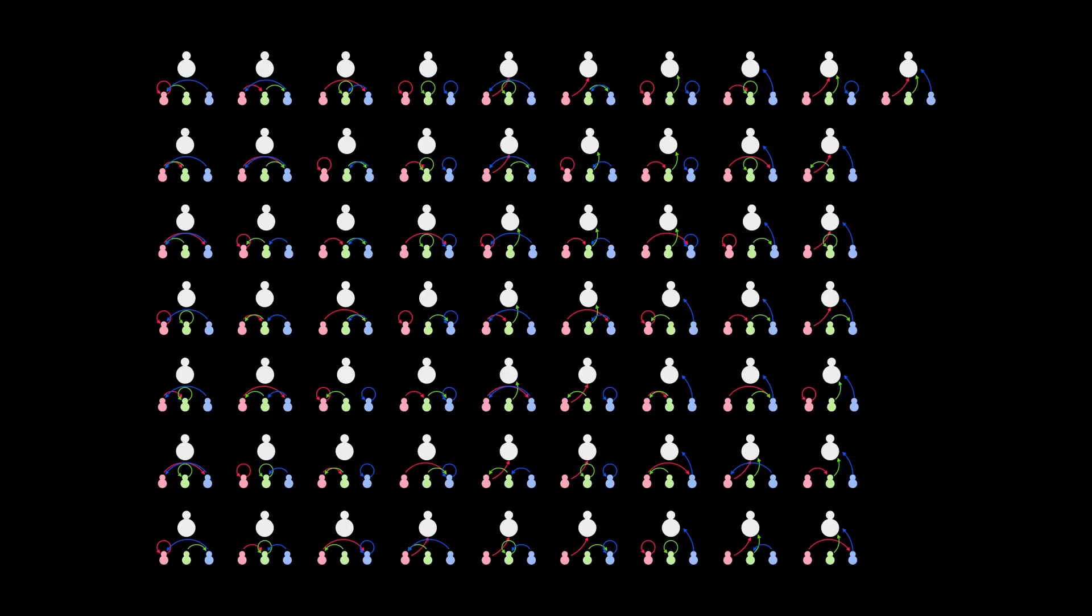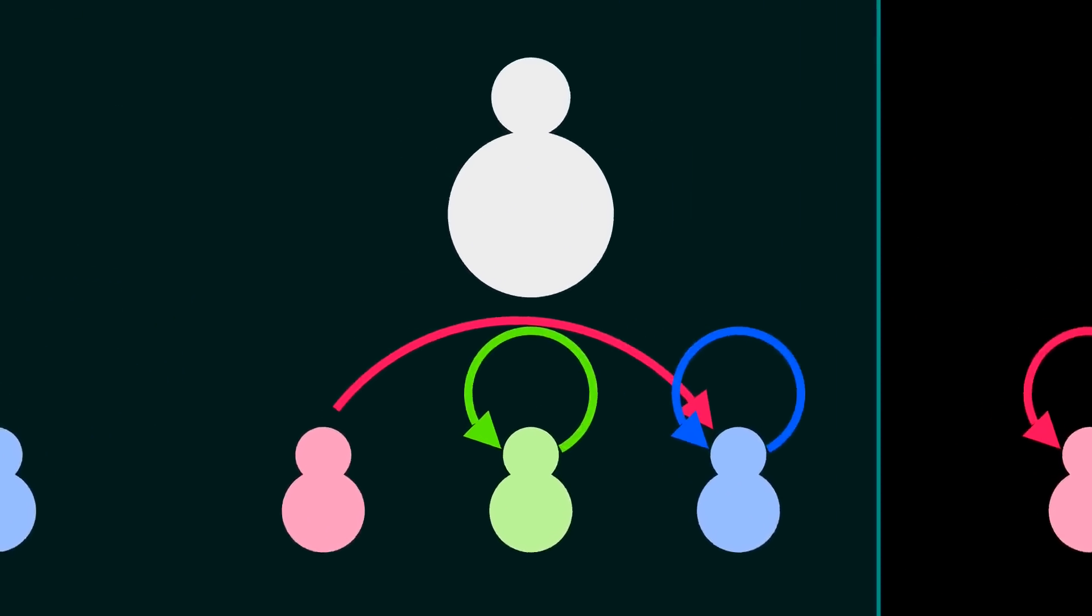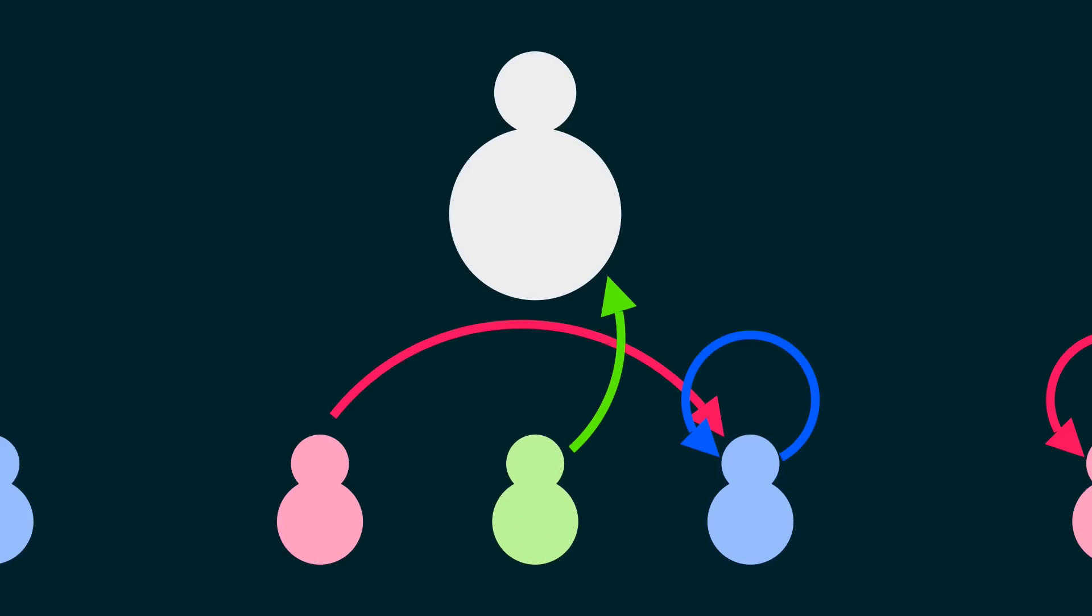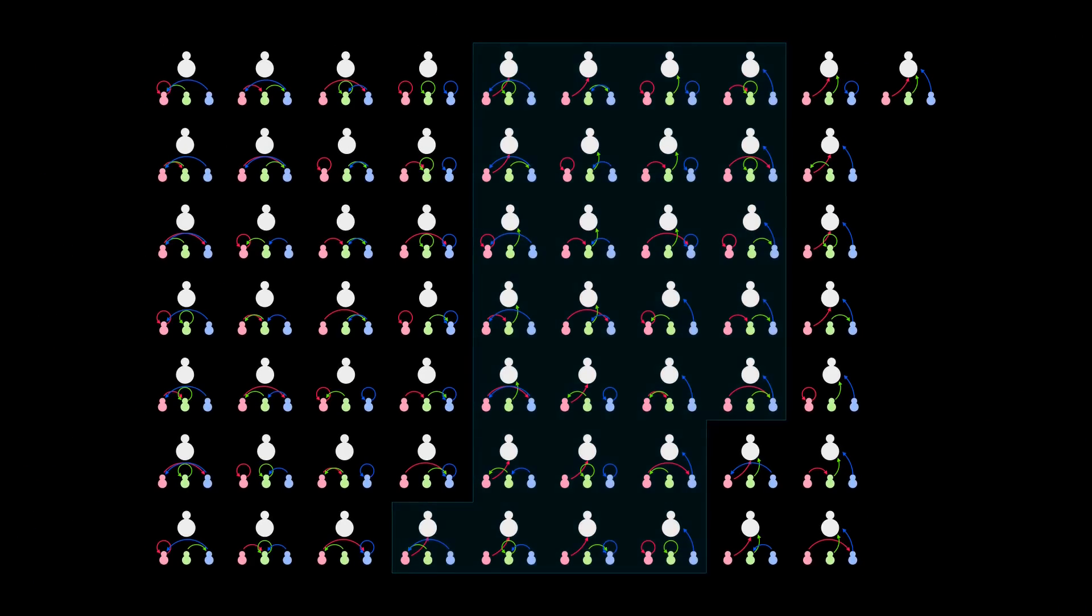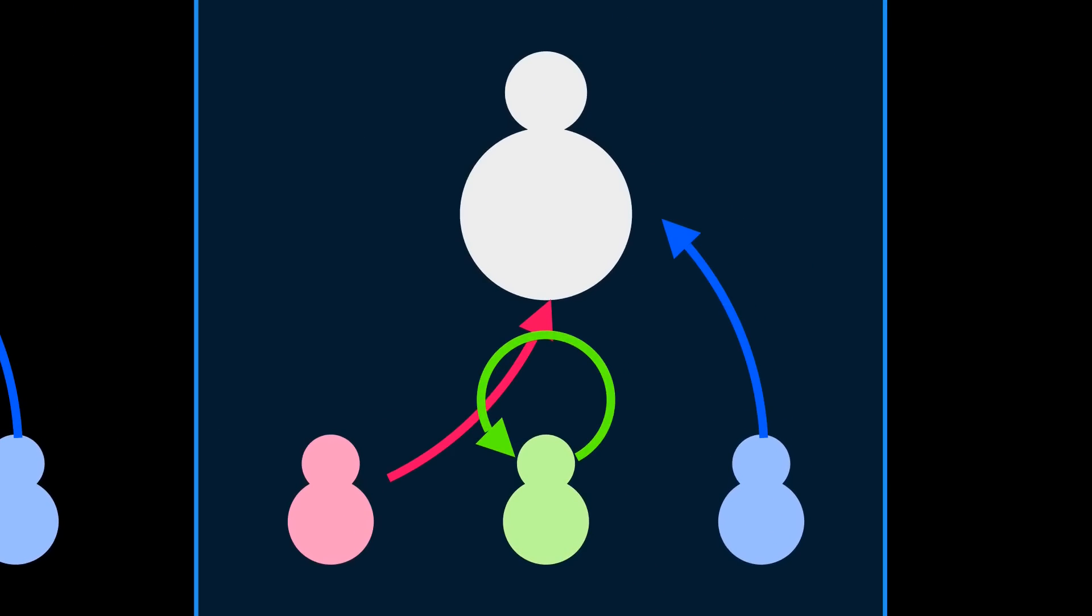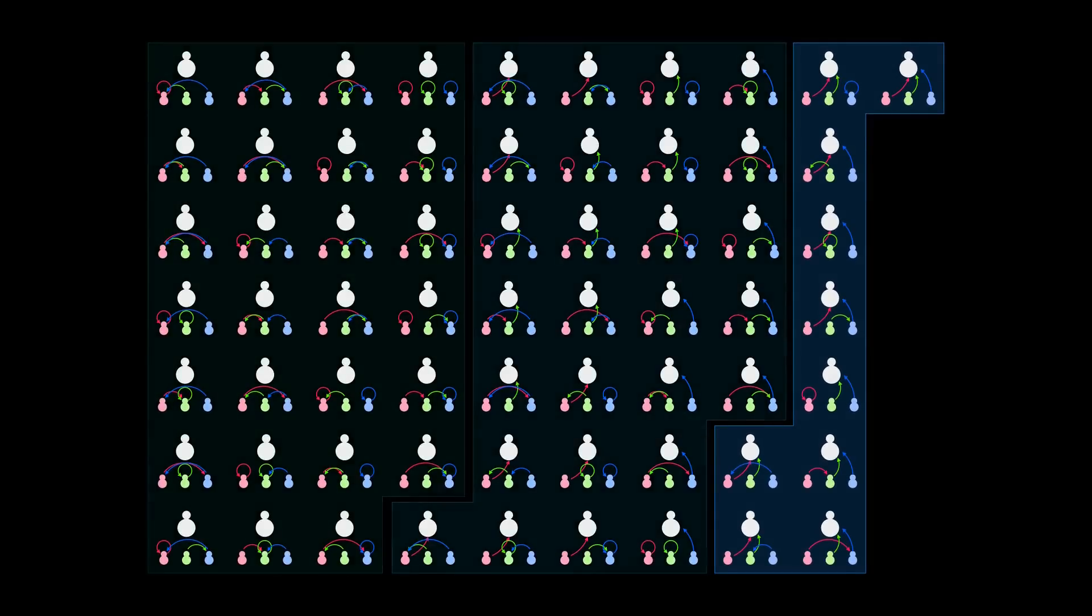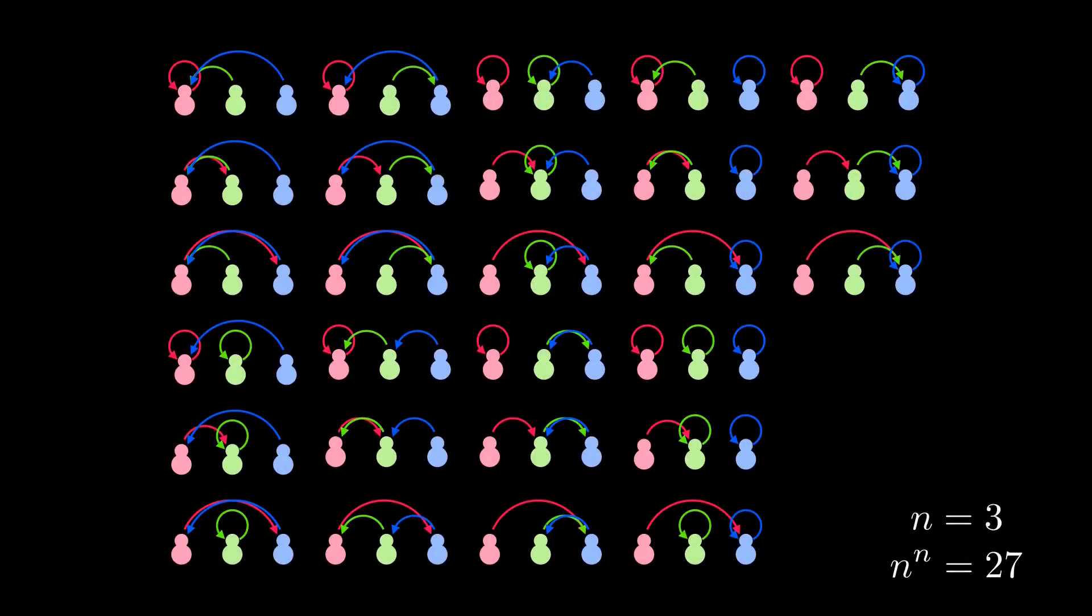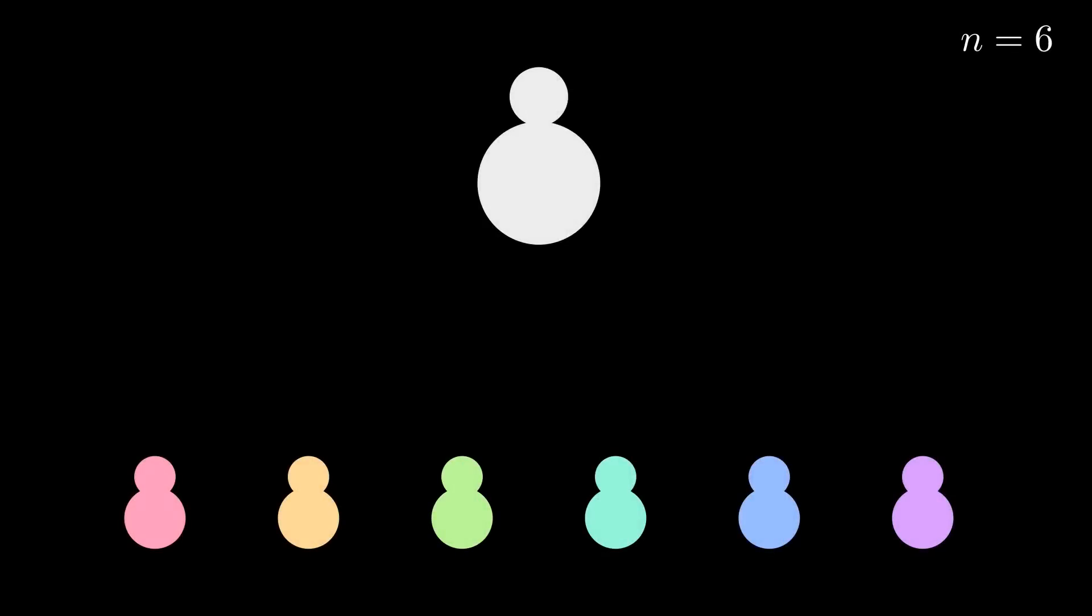The partition into three subsets consists of cases where no kids target the adult, exactly one kid chooses to aim at the adult, and lastly where multiple kids threw their balloons at the adult. So we just have to show that each of these subsets can be injected into the target set. Remember, that's the set of fights where there's no adult to aim at.